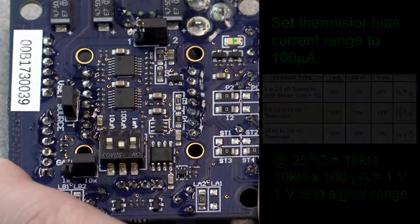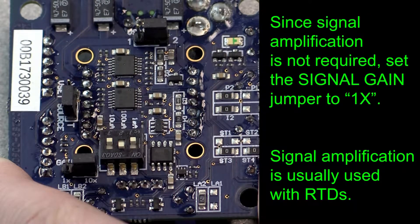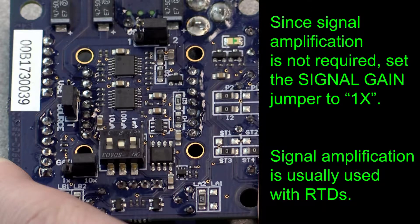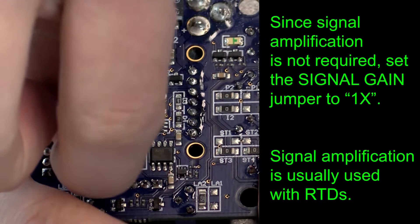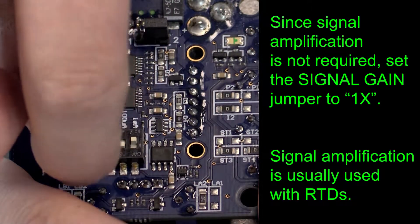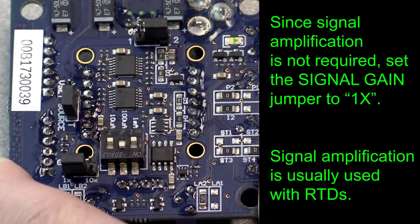The sensor gain jumper allows us to amplify sensor voltage. Since the sensor voltage is in the acceptable range, we use the 1x position and the sensor signal will pass through without amplification.